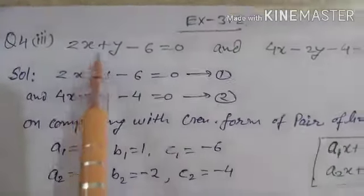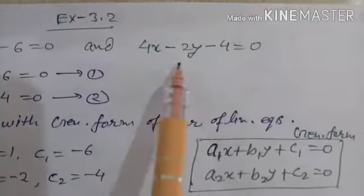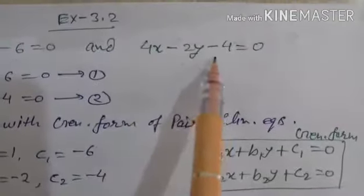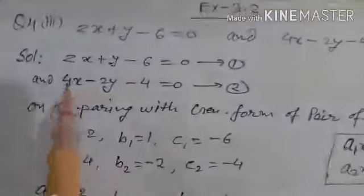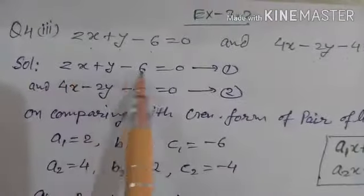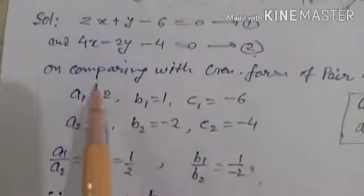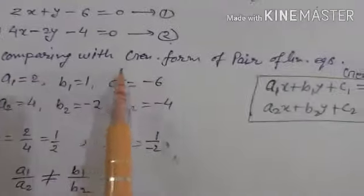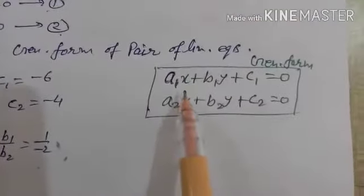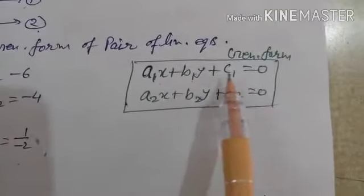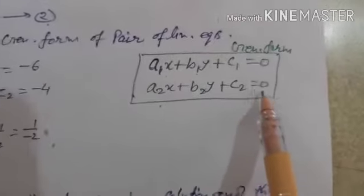The given equations are: equation 1 — 2x plus y minus 6 equal to 0, and equation 2 — 4x minus 2y minus 4 equal to 0. We will compare these with the general form of a pair of linear equations, which is a1x plus b1y plus c1 equal to 0 and a2x plus b2y plus c2 equal to 0.